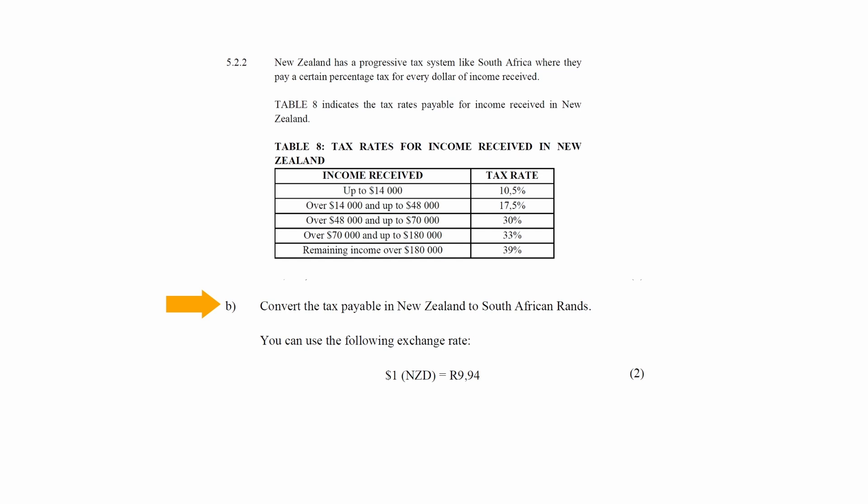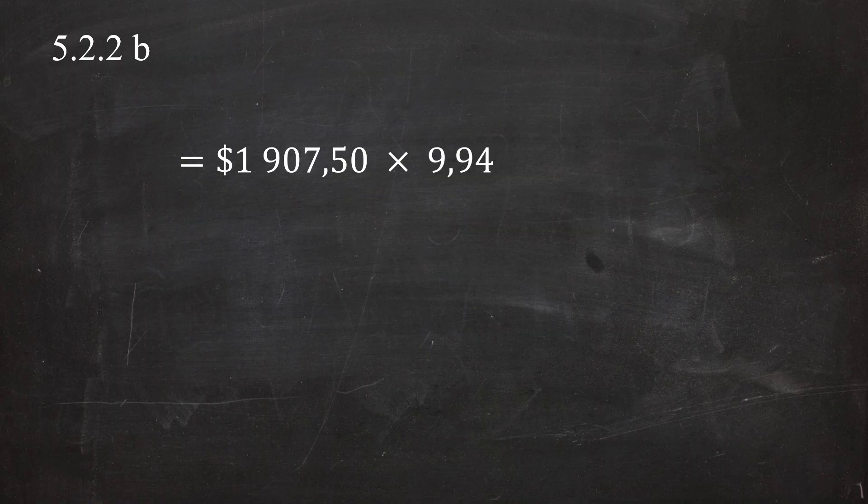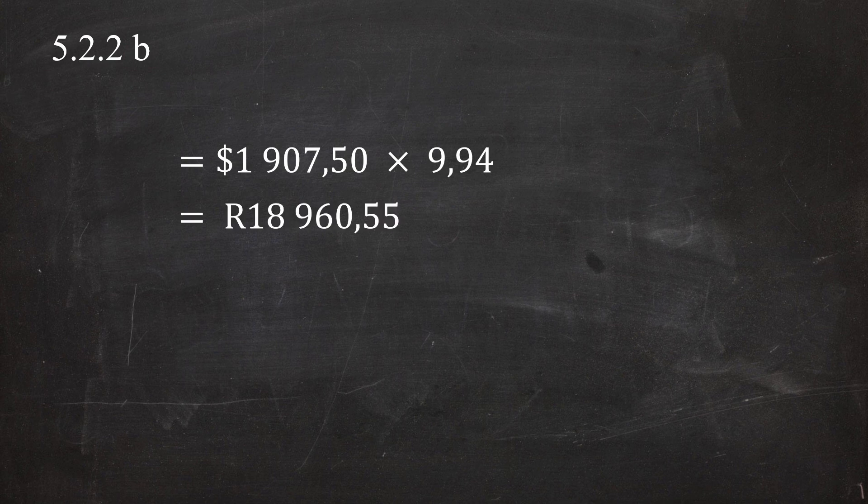In Question 5.2.2b, you are instructed to convert the tax payable in New Zealand dollars to South African Rands using the exchange rate: 1 New Zealand dollar equals R9.94. The tax payable equals NZD 1,907.50 × R9.94 per New Zealand dollar, which equals an annual tax of R18,960.55.